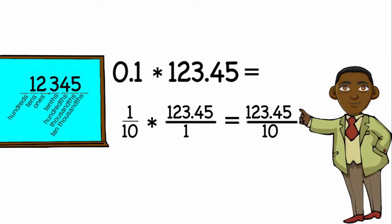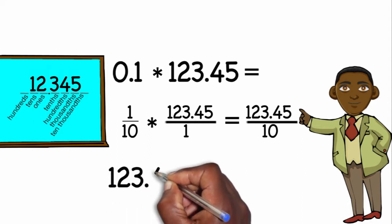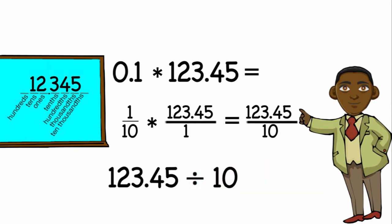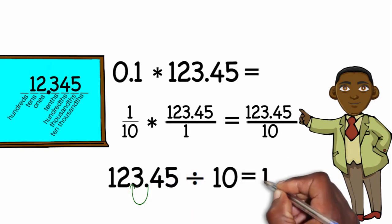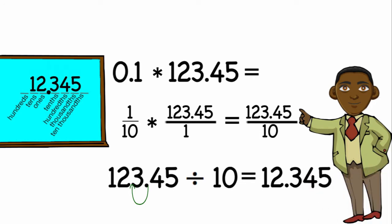Now for the last part, I'm going to change this fraction which has a decimal at the top into a decimal. So I'm going to do 123 and 45 hundredths divided by 10. Dividing by 10 moves the decimal point one spot to the left, so now I have 12 and 345 thousandths as my final answer.